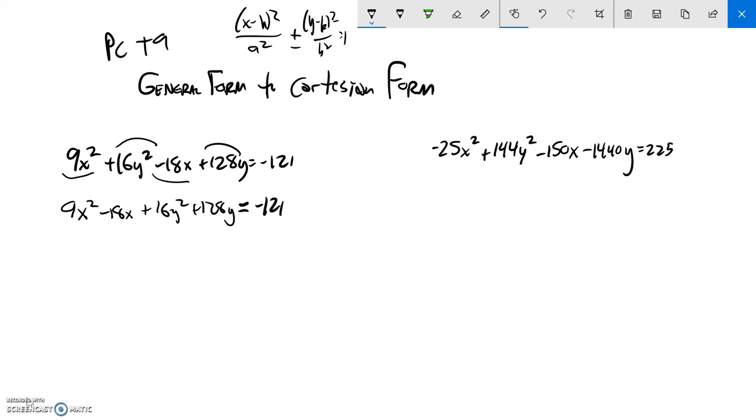Then from here, what I will do is just in these first two terms, I'm going to factor out a 9. And I'm setting it up so I can complete the square. We talked a lot about this in class. Here I'm going to divide out just the 16. So plus 16. And let's see, 128 divided by 16 is 8.